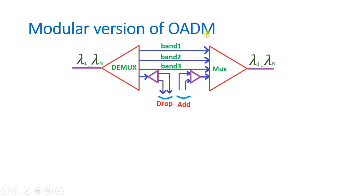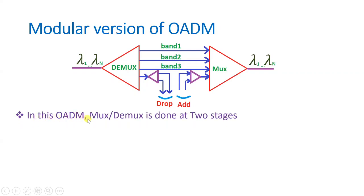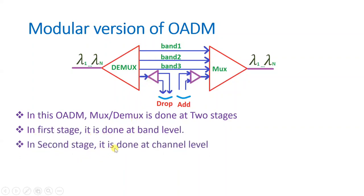In the modular version of OADM there is multi-stage multiplexing and demultiplexing. The MUX and DEMUX operation happens at two levels: in the first stage it is done at the band level, and in the second stage it is done at the channel or wavelength level. So a band contains a combination of wavelengths, and after the second level we have individual channels.